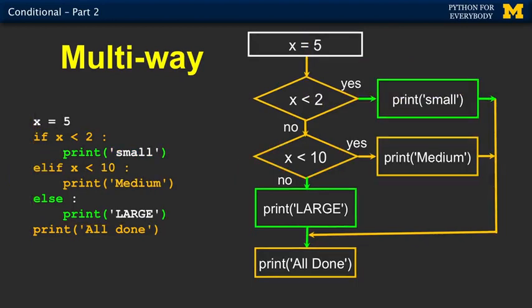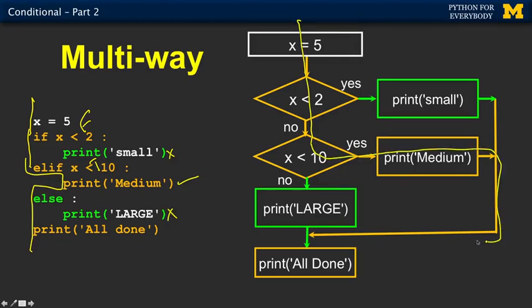If, on the other hand, x was five, you would see a situation where it would come in. This would be false, and so it would skip. Then it comes to this next elif, this becomes true. So then it jumps in and does this code, runs out and is done. So comes in, no, it's not less than two, it is less than ten. So we'll run that little block of code, and now we are all done completely.